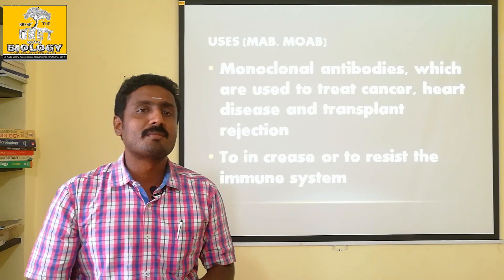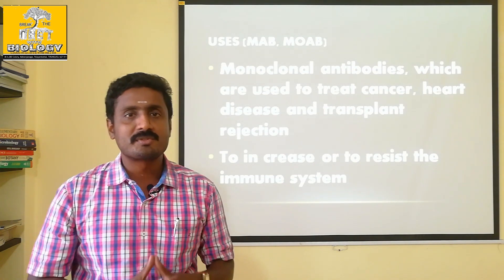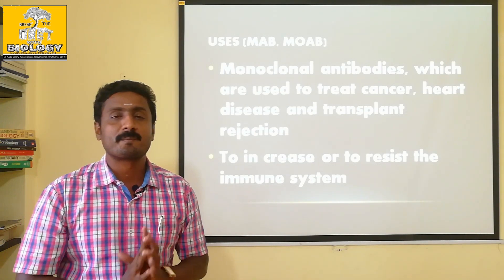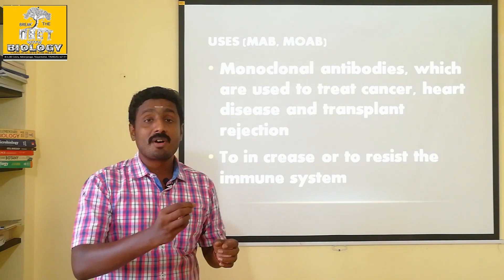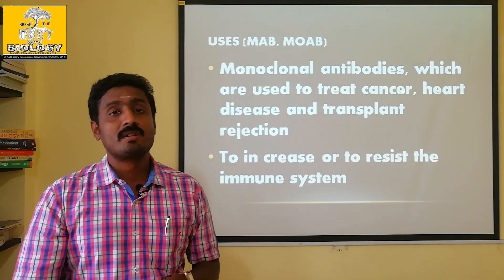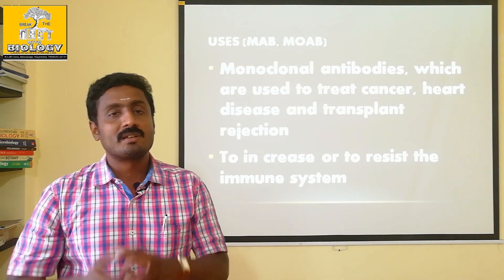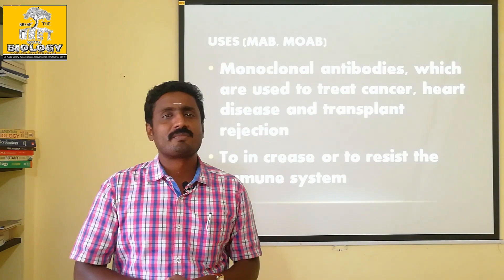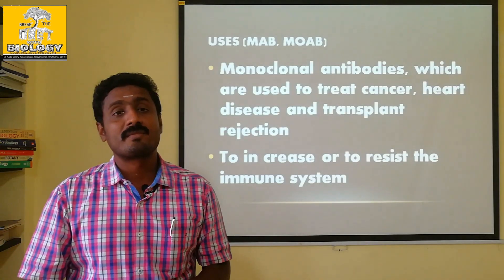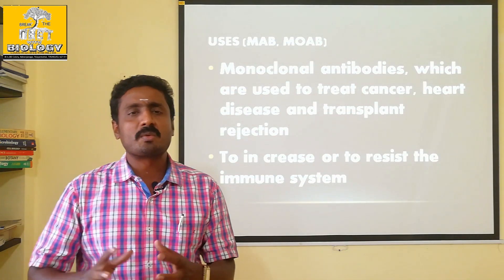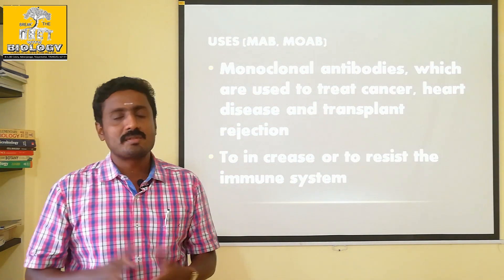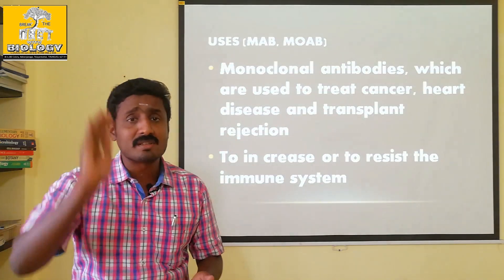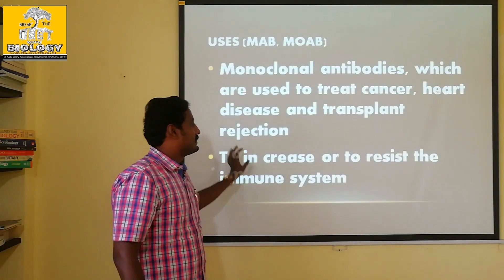It is important to consider small bacterial infections. When the immune system responds, it can kill foreign material in the body. If we cannot respond to the immune system, the transplanted organ may be rejected. If you do transplantation, monoclonal antibodies can help correct the transplant rejection.